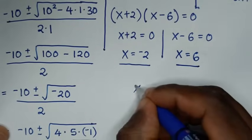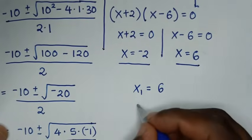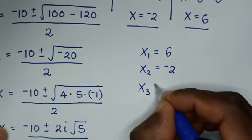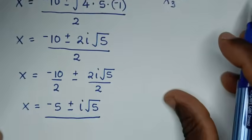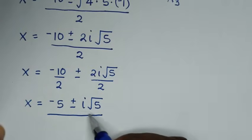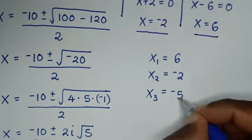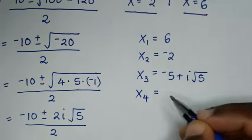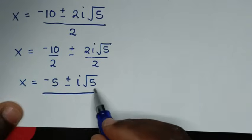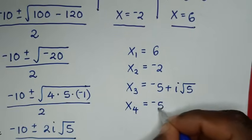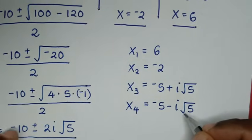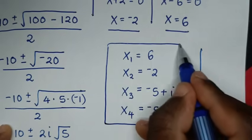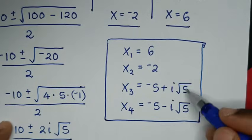Therefore our conclusion: the first value of x is 6, the second value of x is −2 — these are real solutions. The third value of x is −5 + i√5 and the fourth value of x is −5 − i√5 — these are complex solutions. So we have two real solutions and two complex solutions.